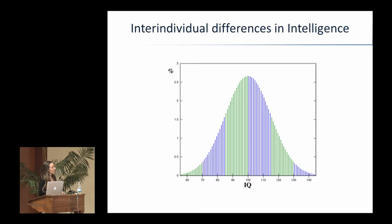These are all our IQ test scores, and some people will score very low on this test and some people will score very high, but most people will be somewhere around the middle. What I'm mainly interested in is finding the causes of why some people are at one end and some people are at the other. For any trait with a distribution like this, there are basically two main factors that introduce differences between individuals: environmental differences and differences in genetic makeup.